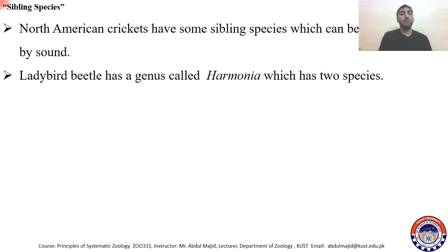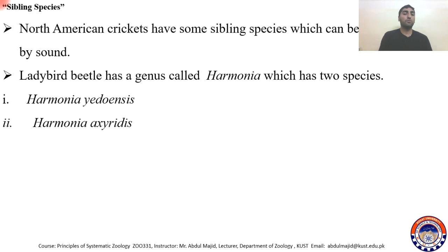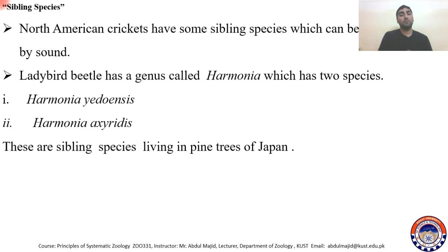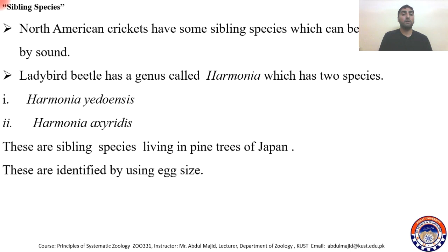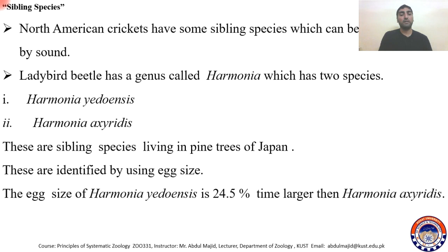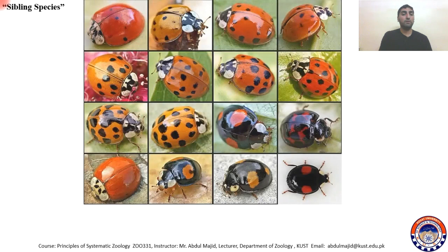Ladybird beetles have a genus called Harmonia which has two sibling species: Harmonia yedoensis and Harmonia exordis. Both live in the pine trees of Japan and cannot be identified by normal morphological observation. You use their elytra measurements: Harmonia yedoensis has elytra that are 24.5% larger than those of Harmonia exordis. This technique is used for their identification.